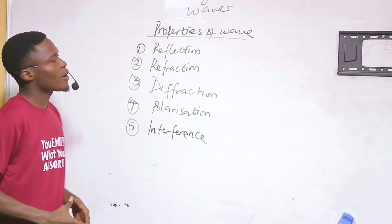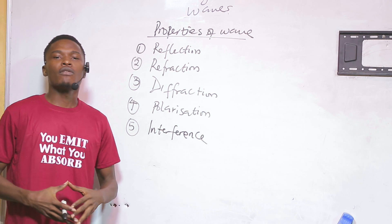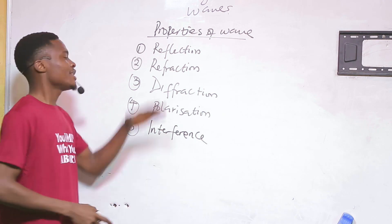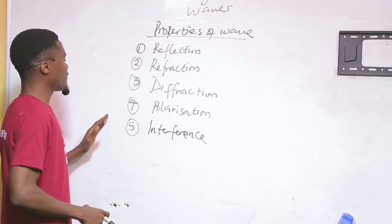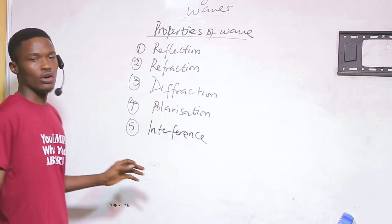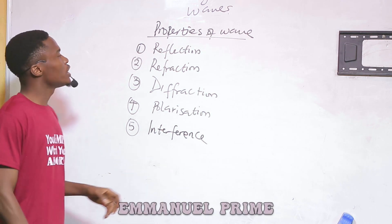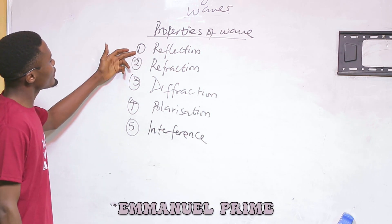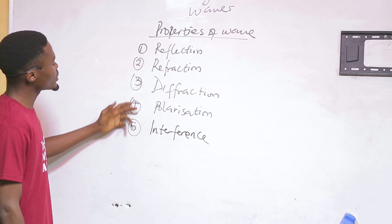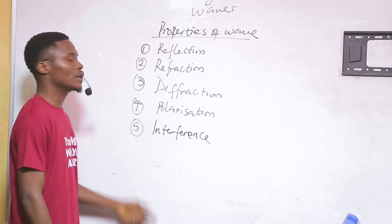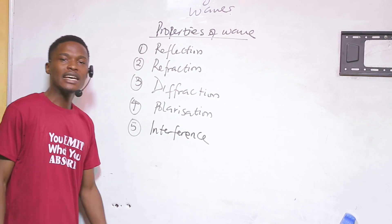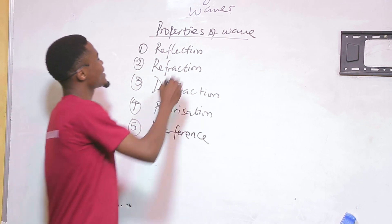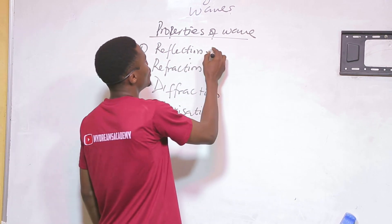We are going to talk about properties of waves. I have listed them for you so make sure you have that in your notes. The properties we are going to be discussing are reflection, refraction, diffraction, polarization, and interference.